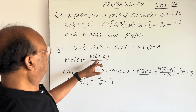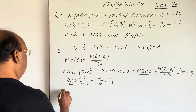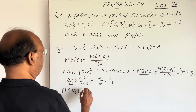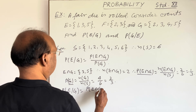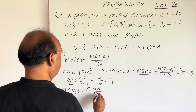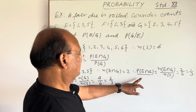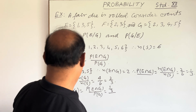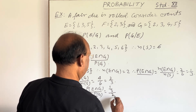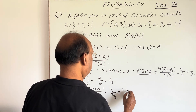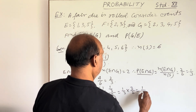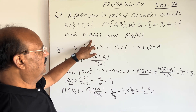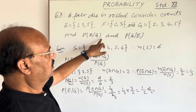Now with the help of this formula we can get the result very easily. Probability of E conditioned to G equals probability of E intersection G divided by probability of G, which is 1/3 divided by 2/3. So finally we get 1/3 × 3/2 = 1/2. This is the answer for probability of E conditioned to G.